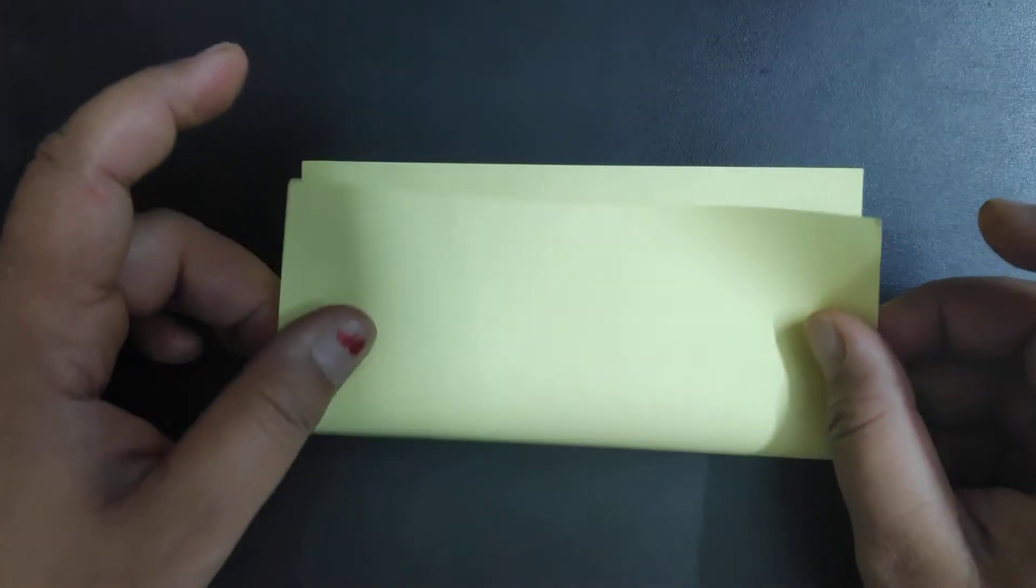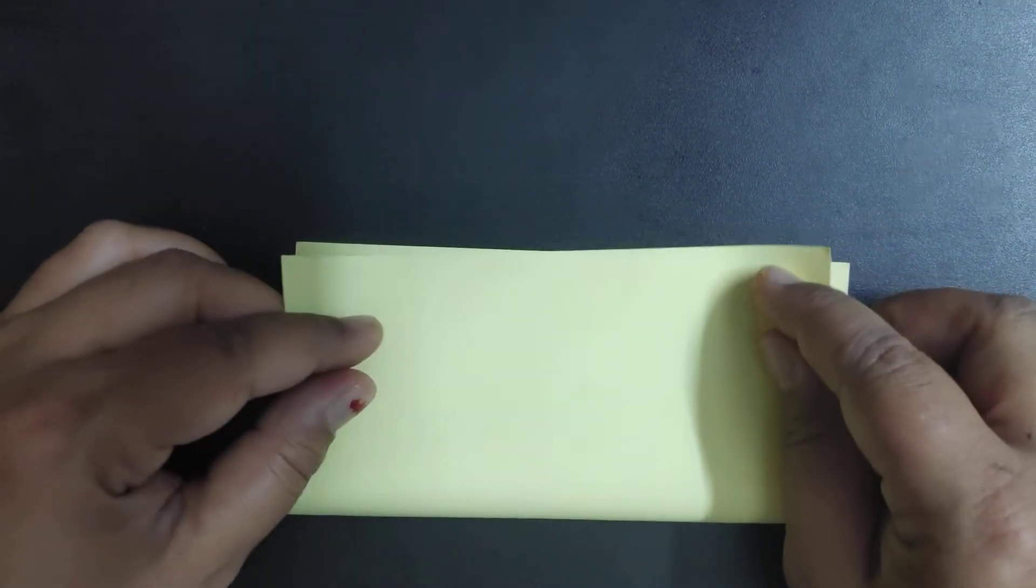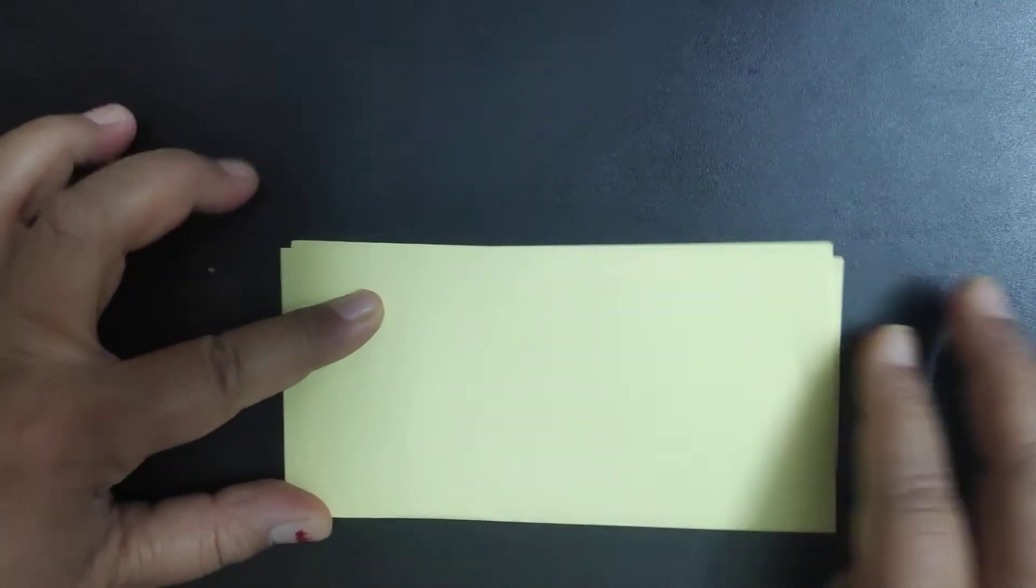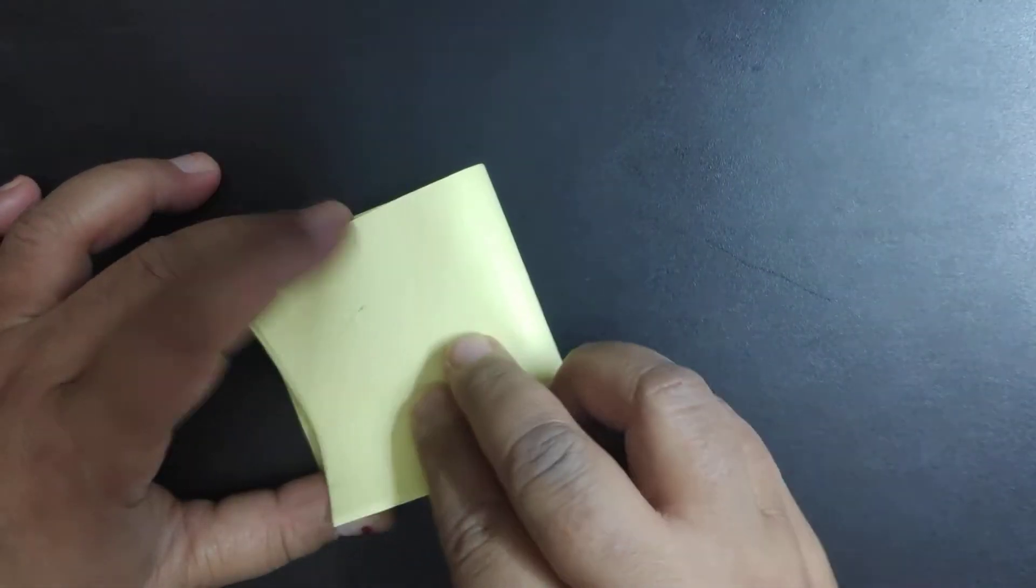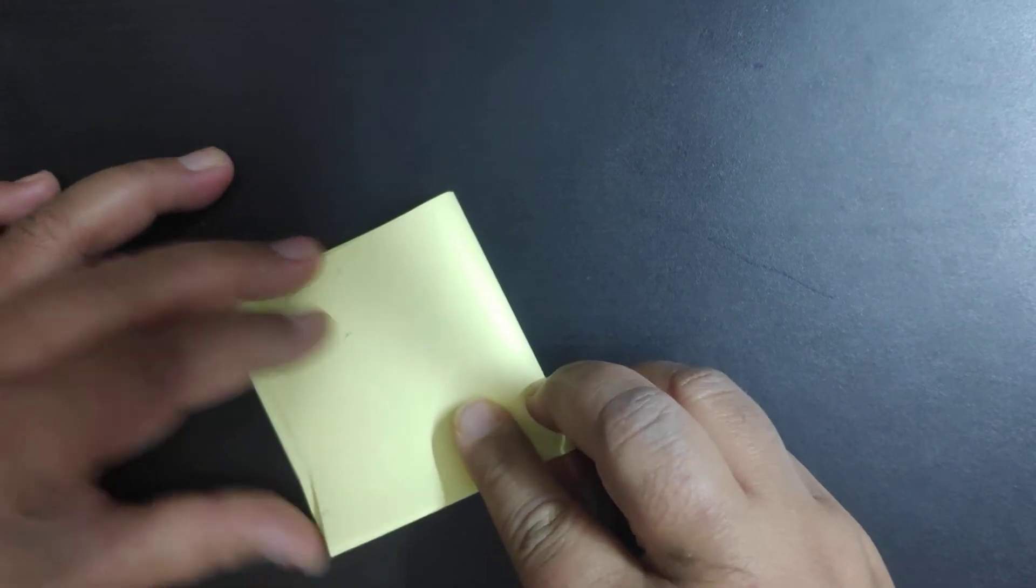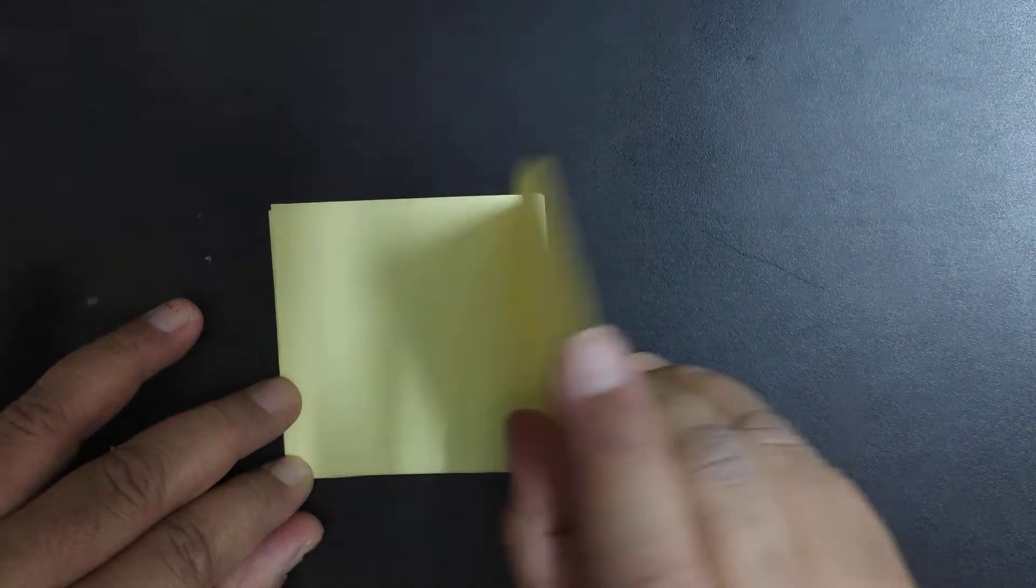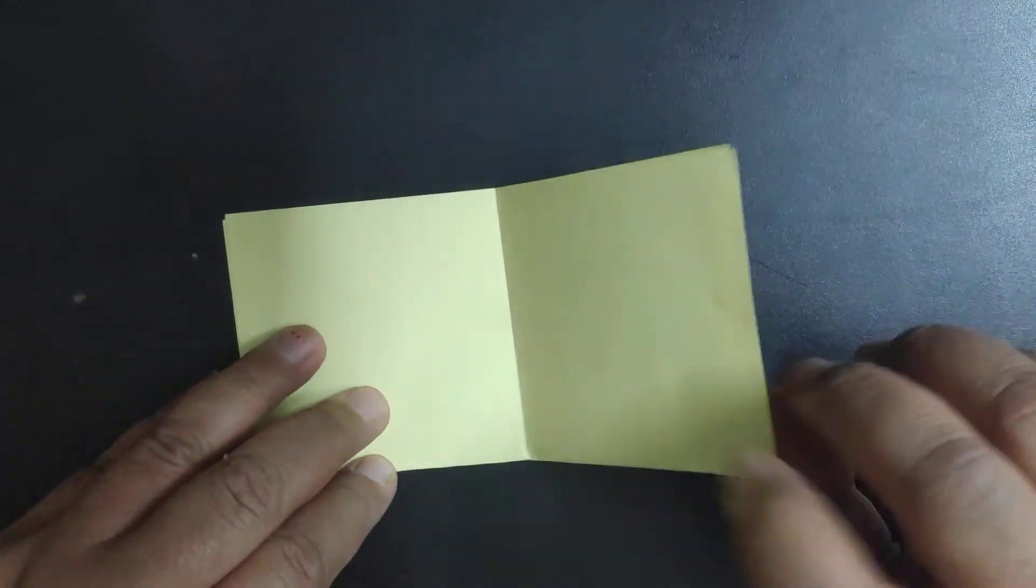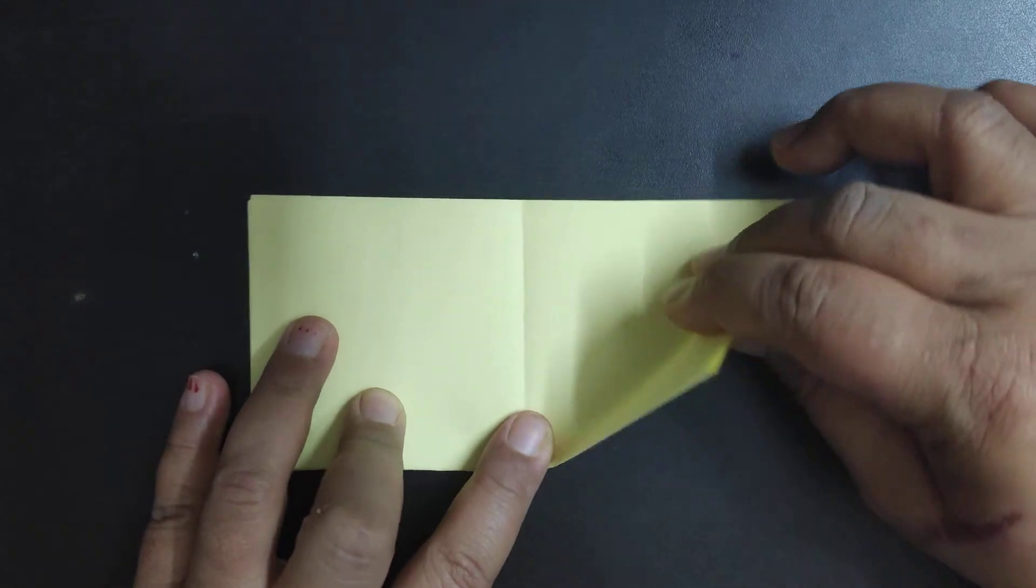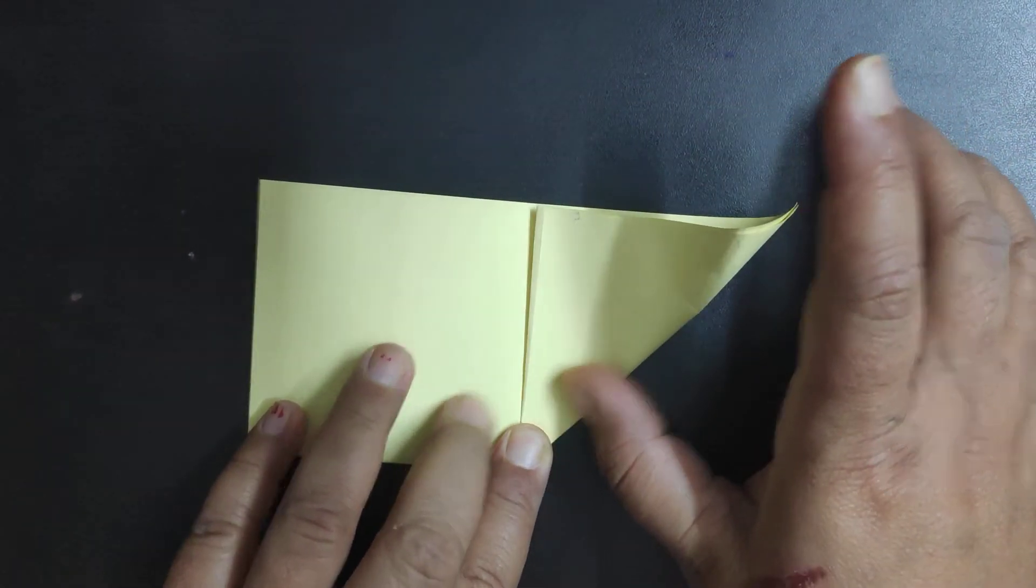Take a square sheet of paper. Fold it once to make it half. Fold it one more time and press it. Now open the last fold and you can see the crease. Now take one corner and fold it like this so that it meets the crease.